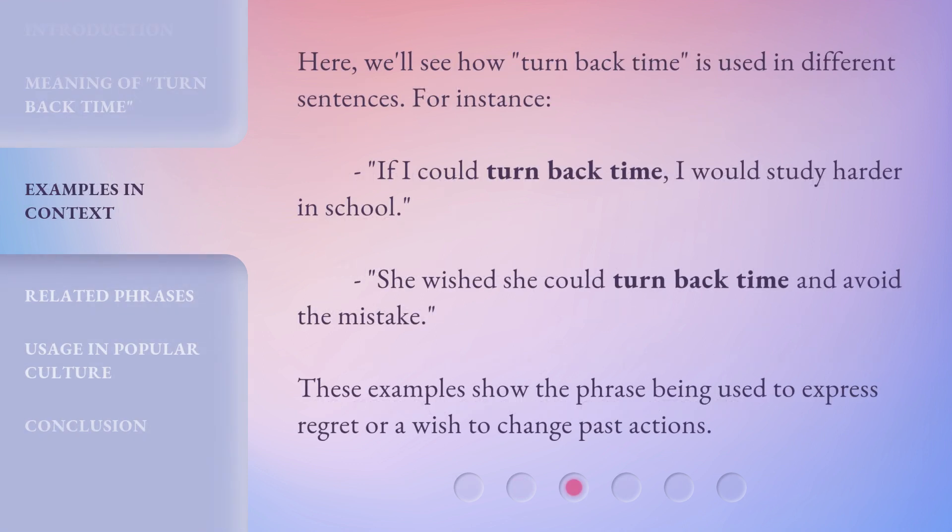Here we'll see how 'turn back time' is used in different sentences. For instance: 'If I could turn back time, I would study harder in school.' 'She wished she could turn back time and avoid the mistake.' These examples show the phrase being used to express regret or a wish to change past actions.